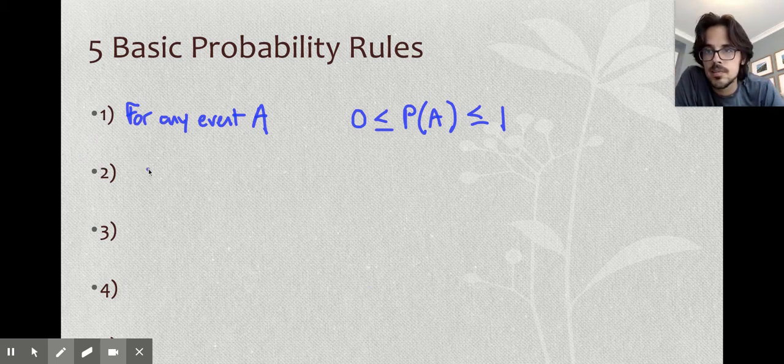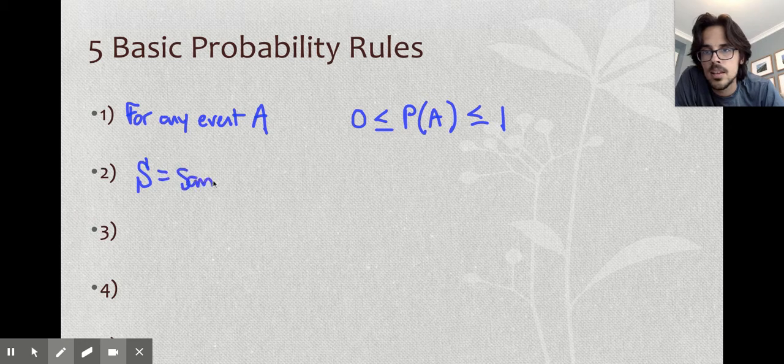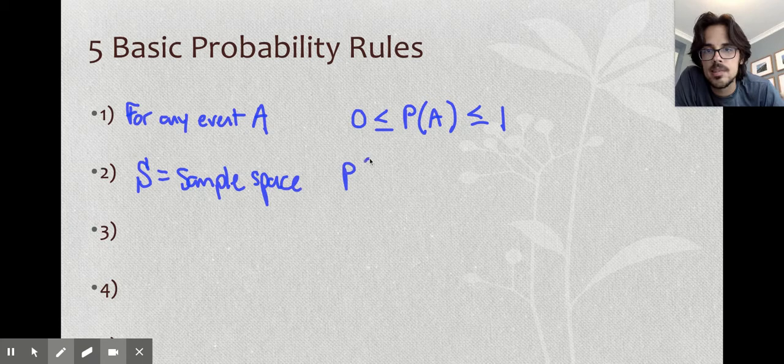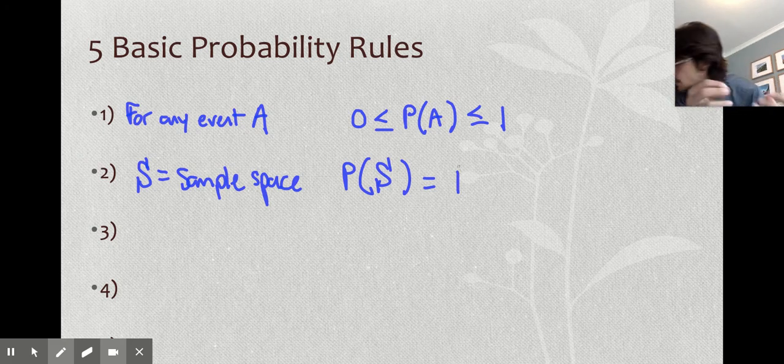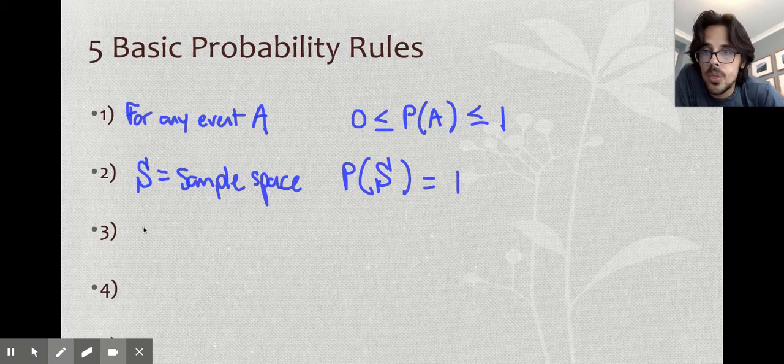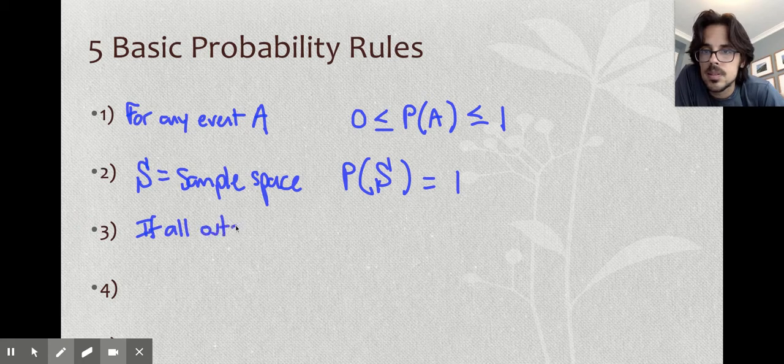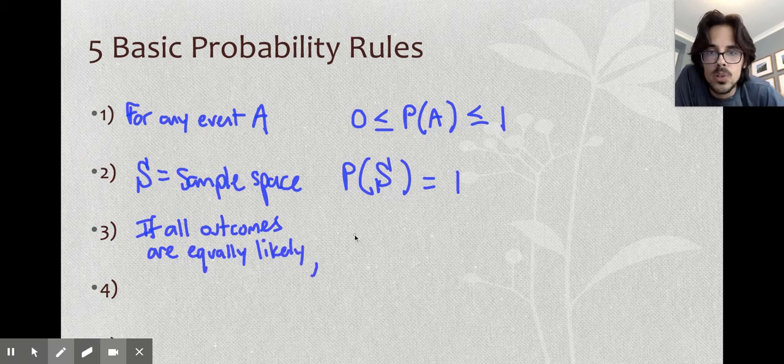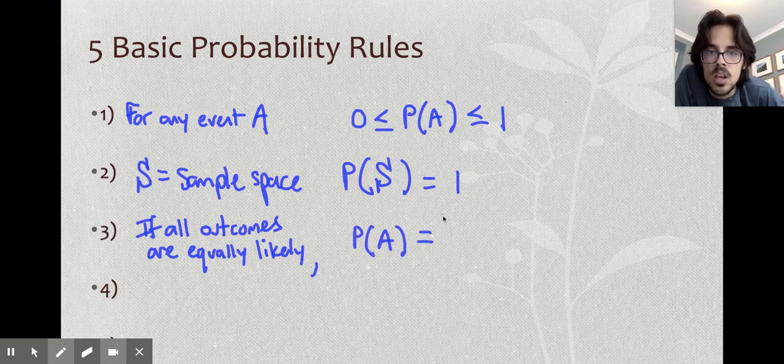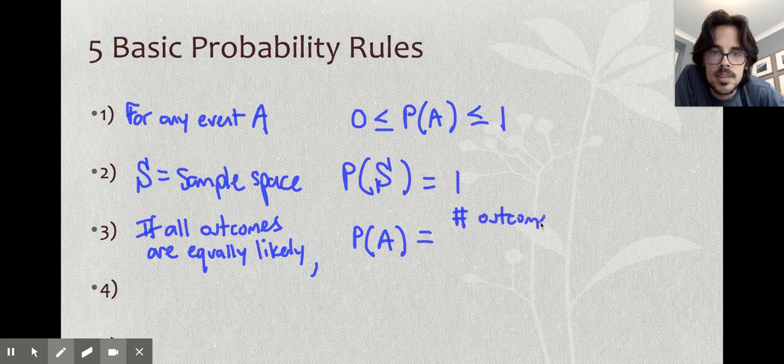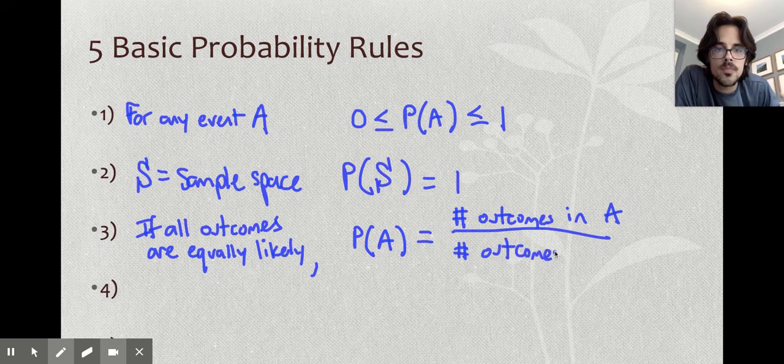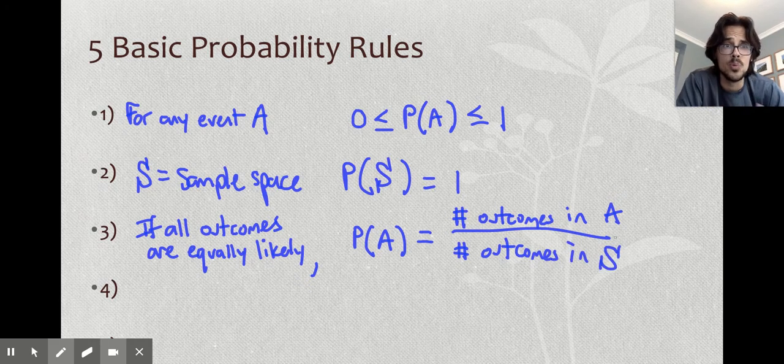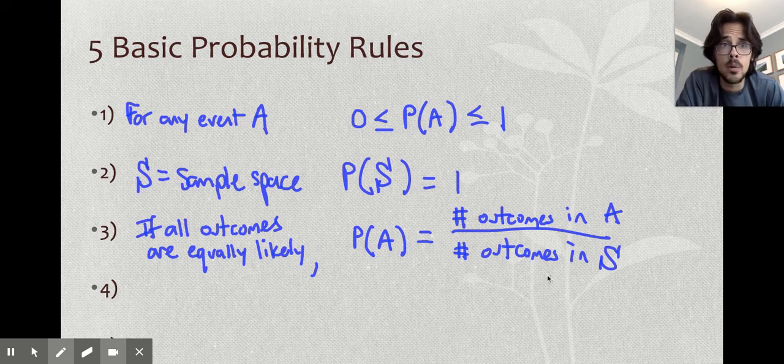If S is the sample space, the probability of S occurring is one. Basically, if you're going to have a sample space, it has to be the probability of one. It's everything that is possible in the problem. Third rule: if all outcomes are equally likely, then what you do is what we did on the last example. To find the probability of an event, you take the number of outcomes in A, the number of outcomes in your sample space. All it's saying is you take what you're looking for out of the total to find a probability.